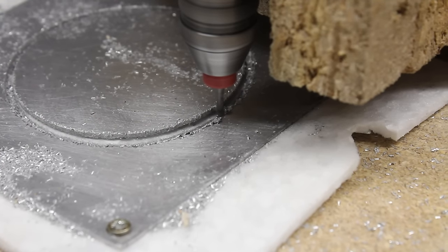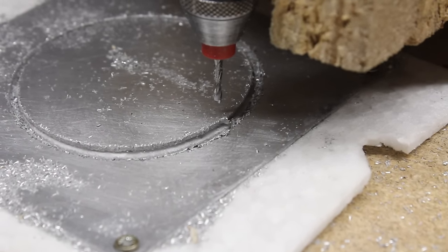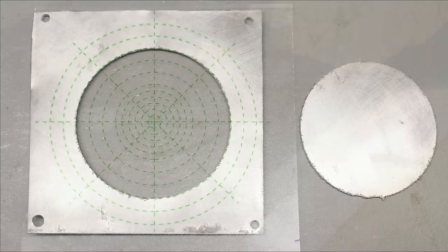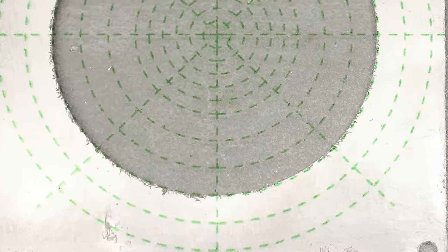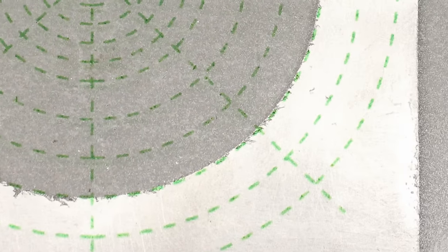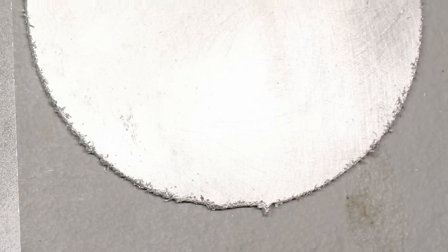The CNC needs 20 minutes to cut this 6cm disc. The result isn't too bad, considering the low quality bit and the low power machine. But just have a look at the rough cutting edge before considering to process solid aluminum with this CNC.